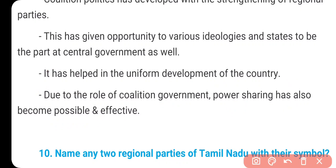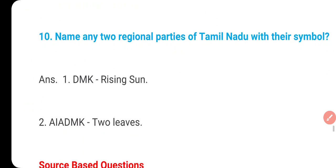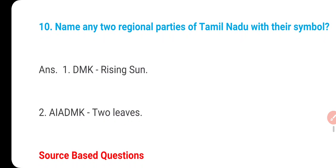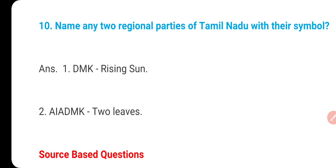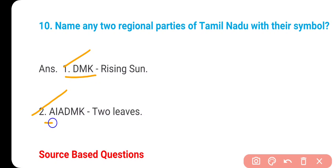The tenth question: name any two regional parties of Tamil Nadu with their symbols. Tamil Nadu's two regional parties are DMK — Dravida Munnetra Kazhagam, whose election symbol is the Rising Sun — and AIADMK — All India Anna Dravida Munnetra Kazhagam, whose election symbol is Two Leaves.